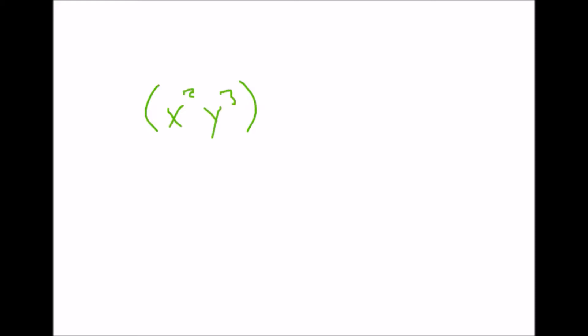This rule also applies if you have two different things inside parentheses. So let's say you have x squared times y to the 3rd power, and that's taken to the 5th power. What you're going to do is multiply each of those exponents by the 5, and you'll get x to the 10th, y to the 15th.